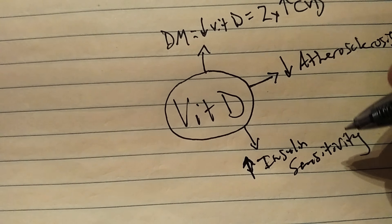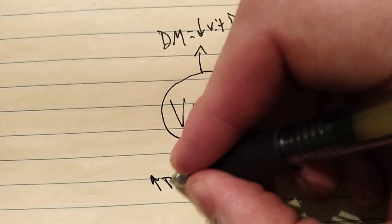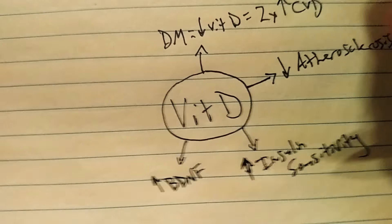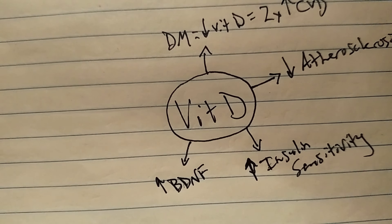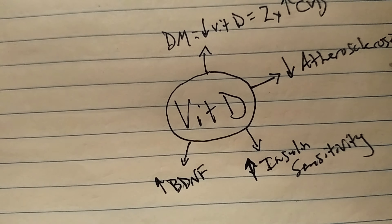In terms of brain health, vitamin D has been shown to increase what's called brain-derived neurotrophic factor. And what that does is improves neuronal synapses and neuron function so that cognition is improved and risk for cognitive decline and neurodegenerative diseases is decreased.